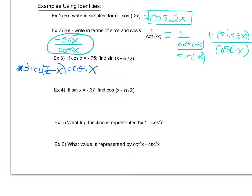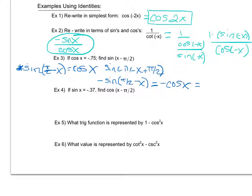So I'm going to factor out a negative 1, making this become sine of negative 1 times (negative x plus pi over 2). Since sine is an odd function, I can pull the negative out front, giving me negative sine of (pi over 2 minus x). Since sine of pi over 2 minus x is cosine of x, this becomes negative cosine of x. Cosine of x is negative 0.75, so negative times negative 0.75 gives us just 0.75.